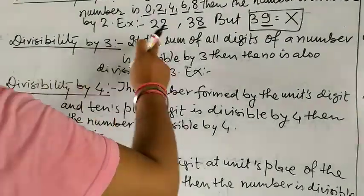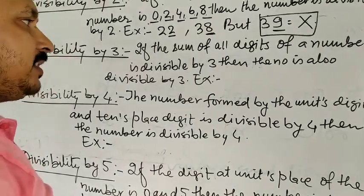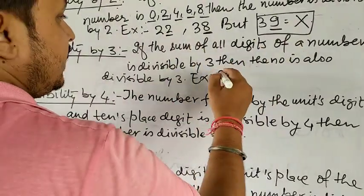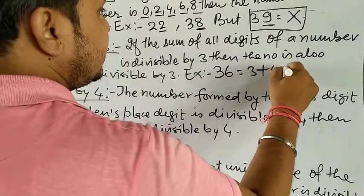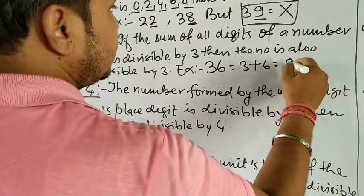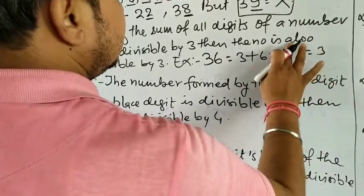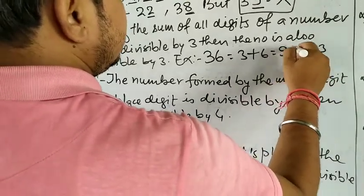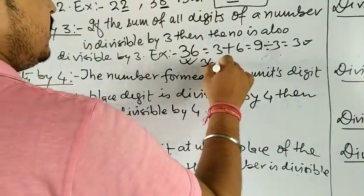Divisibility rule of 3: If the sum of all digits of a number is divisible by 3, then the number is also divisible by 3. For example, 36: 3 plus 6 equals 9. 9 is divisible by 3, so 36 is divisible by 3.